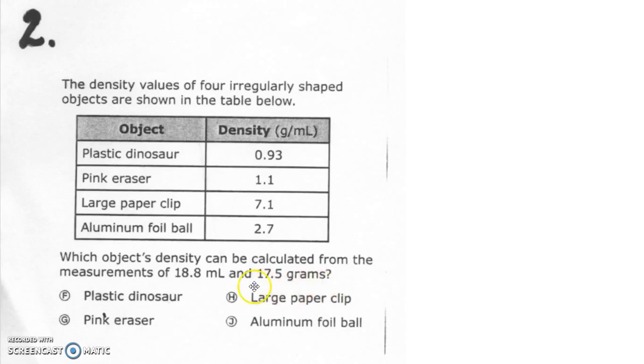Volume is measured in milliliters, so that's your volume. And mass is measured in grams, so that's your mass. So you do mass divided by volume.